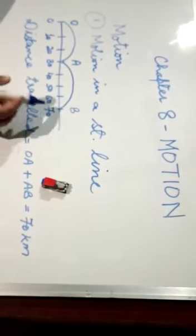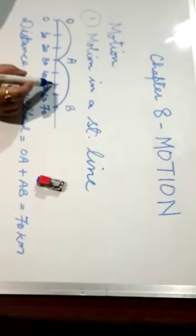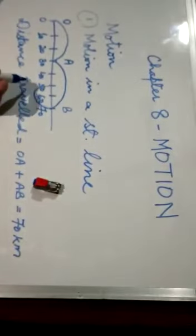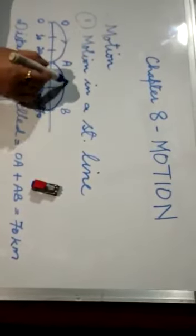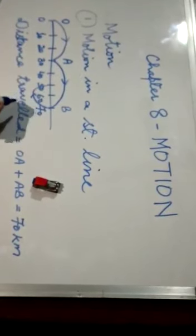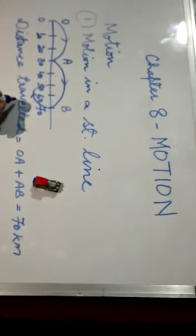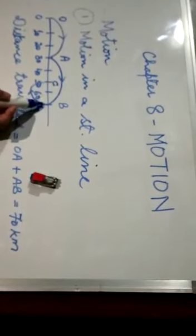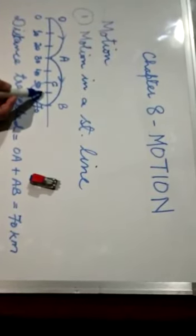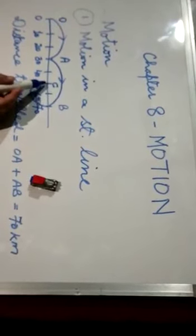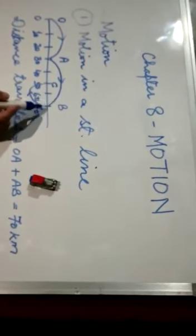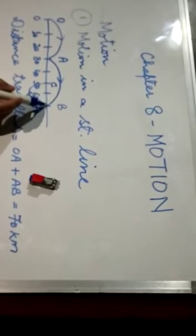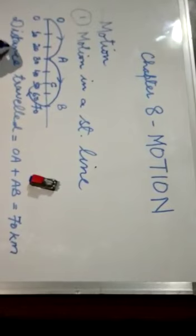After this, let us say, the object travels a distance of 20 kilometers more in the backward direction. And, let us say, it reaches point C, which is from 70 to 60, 10 kilometers, and from 60 to 50, another 10 kilometers, that is, this much length is 20 kilometers.